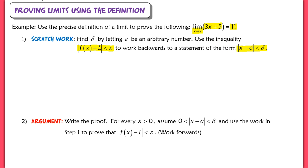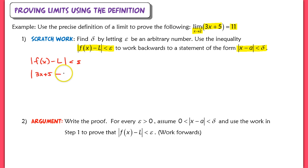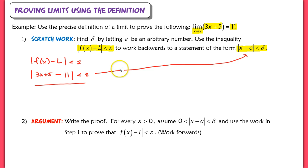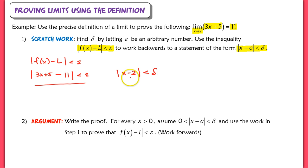Let's see that first step in action. We start with the inequality that the distance between f(x) and L is less than epsilon. Making substitutions, f(x) is 3x plus 5, so we have the absolute value of 3x plus 5 minus 11 is less than epsilon. We want to manipulate this to have x minus 2 on the inside of the absolute value bars, since 2 is our a value.